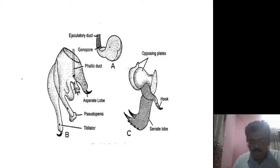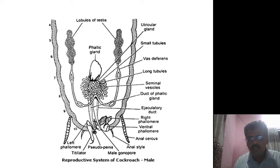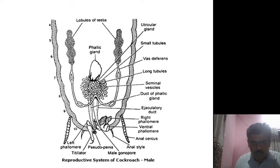The spermatophore is formed by secretions of three different parts: the utricular majoris, ejaculatory duct, and the phallic gland. In summary, the male reproductive system includes a pair of testes situated at the fourth, fifth, and sixth abdominal segments of the cockroach — trilobed and having 30 to 40 small whitish follicles responsible for formation of spermatozoa.